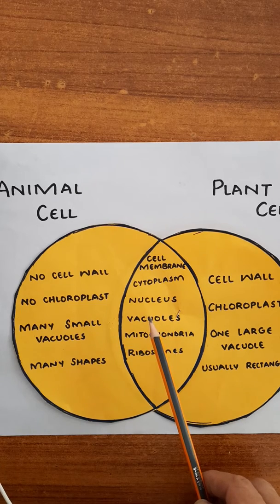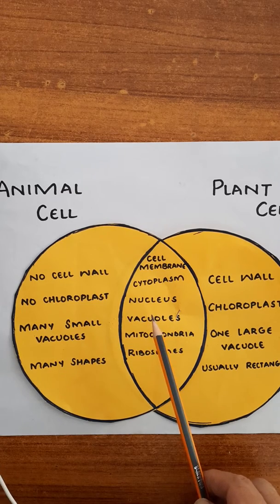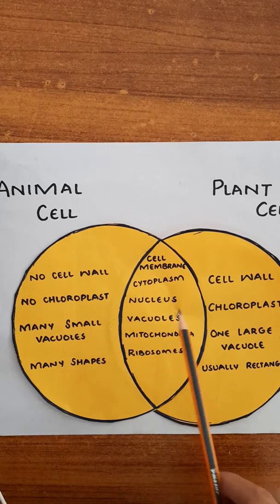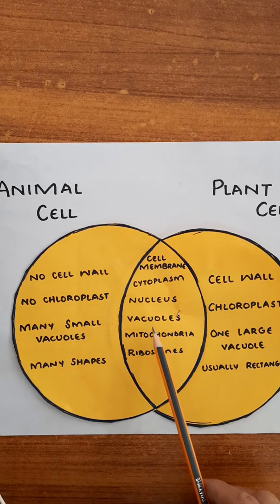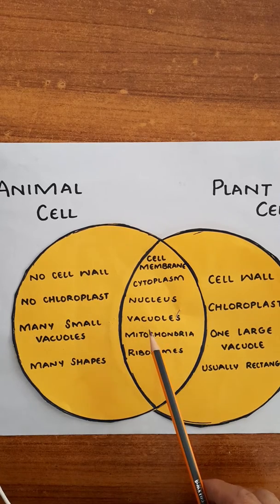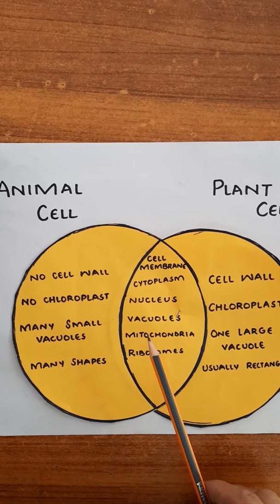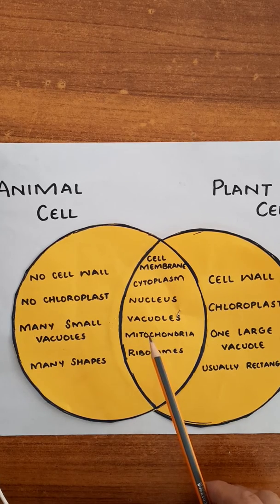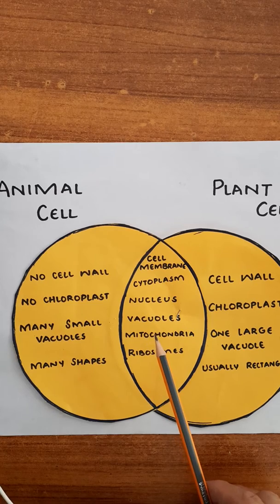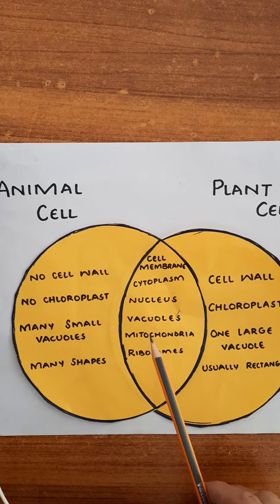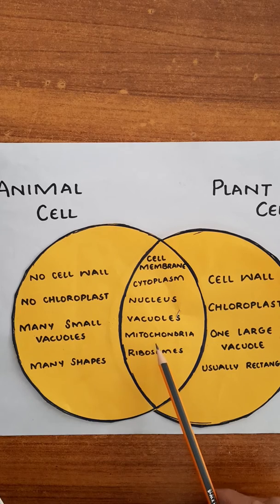Then we have vacuoles. Vacuoles are sac-like or bag-like structures that serve as storage houses in both plant and animal cells, storing food, water, waste material, and so on.